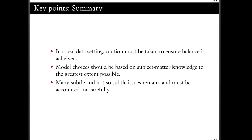In any real data setting, we have to be sure that balance has been achieved. Model choices need to be based on subject matter knowledge to the greatest extent possible. There are many subtle issues that remain — like how to do good variable selection for your propensity score, which is by no means a settled issue. And there is absolutely no settled way of computing valid standard errors when using matching. So there are a number of difficulties that still need to be dealt with.